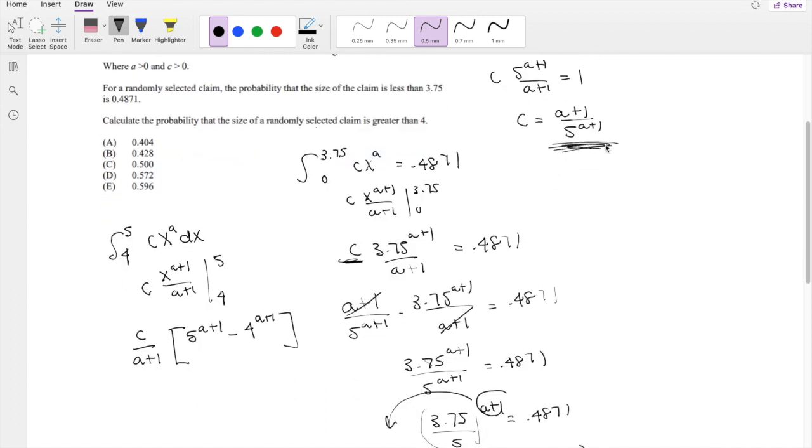But we know c is this thing right here. So when we plug it in, (a+1) over 5^(a+1) times (a+1) here. (a+1)'s cancel.